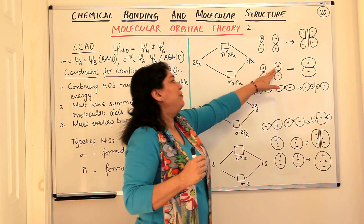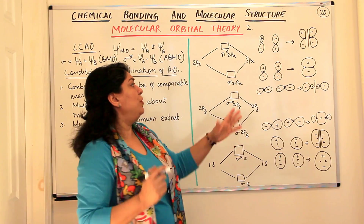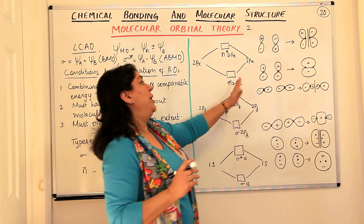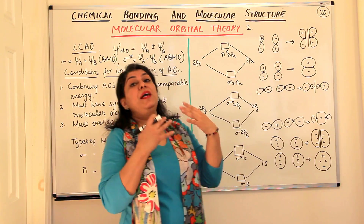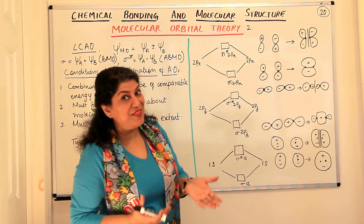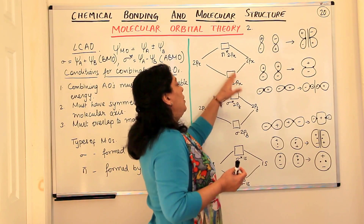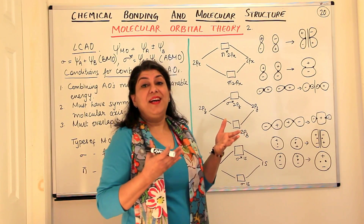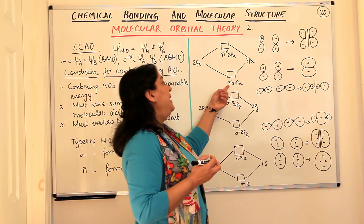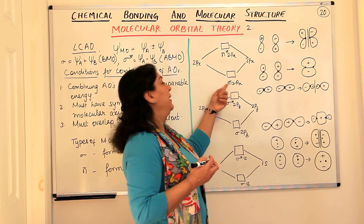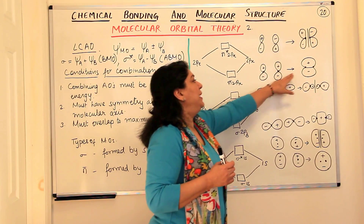When the positive lobe is falling over the positive lobe, it would be effective overlap, and as a result, since it is constructive interference, it would result in a molecular orbital which is reinforced—that is, the pi bonding 2px molecular orbital.